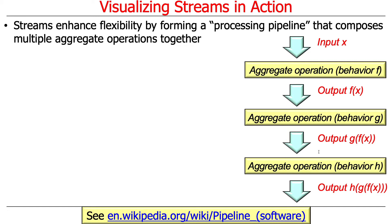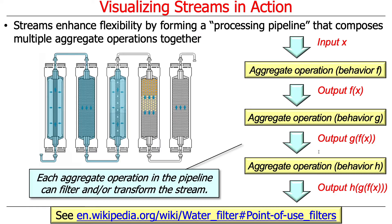As we talked about before, streams enhance flexibility because we can form a processing pipeline where we can compose multiple aggregate operations together in a nice sequence of fluent operations. Each aggregate operation can filter and/or transform the elements in the stream, much like a point-of-use filtration system that you might have in a house.